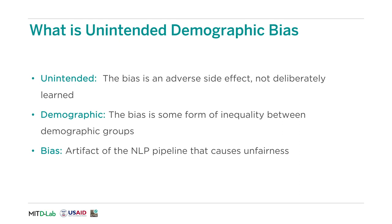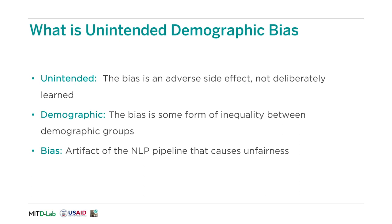We now break down what unintended demographic bias means. The 'unintended' part means that this bias comes as an adverse side effect, not a liability deliberately learned in our machine learning model. The 'demographic' part means that the bias translates into some sort of inequality between demographic groups that could cause discrimination in a downstream machine learning model. Bias is an evaluated term, so it is important to center on a specific form of bias that causes unfairness in typical machine learning applications.